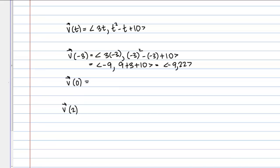What about V of 0? Here I'm plugging in 0 for T. So this one's a little easier to just look at. So for my X component, I should just get 0. And for my Y component, I should get 10.